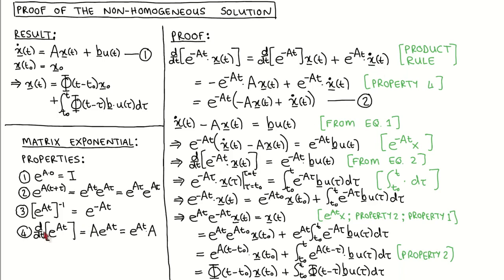We now use property 4 to write the derivative of the matrix exponential of minus At as minus the matrix exponential of minus At times A. The intermediate result is now that this is equal to this, which we'll use to get rid of x dot.